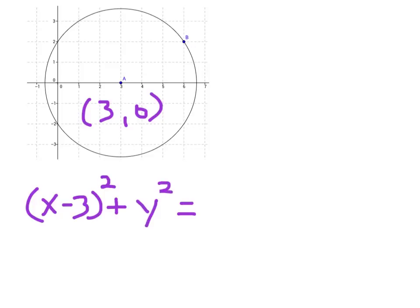Radius. Well, let's look at this. It goes from here over to... It doesn't go 3, and it doesn't go 4. It goes somewhere in between 3 and 4. Well, I've got to figure that out, and that's what we're going to use Pythagorean theorem for.